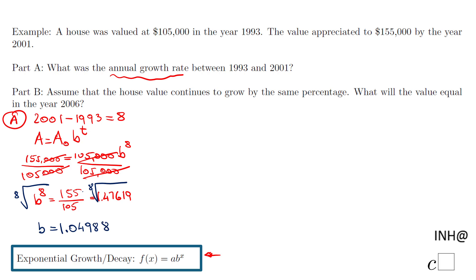This is b, which I expected to be more than 1. But we need the annual growth rate. Remember that b equals 1 plus r, where r is the growth rate.